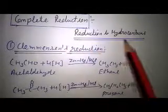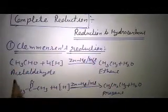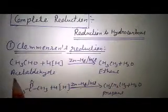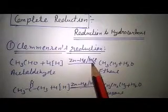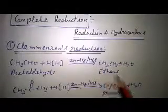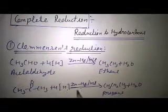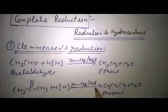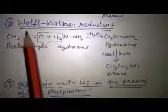Students, now we are doing complete reduction, in which alkanes or ketones are changed into hydrocarbons — reduction to hydrocarbon. The first reaction is Clemmensen reduction, in which aldehyde is changed into hydrocarbon. The first reaction is acetaldehyde reacting in the presence of zinc amalgam and hydrochloric acid to change into ethane plus water. A similar reaction takes place in ketone — acetone plus 4H in the presence of zinc amalgam and HCl gives propane plus water.